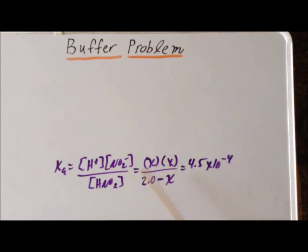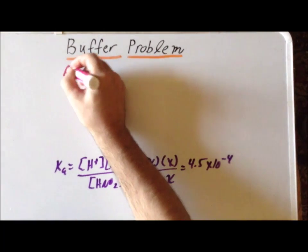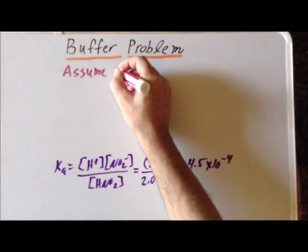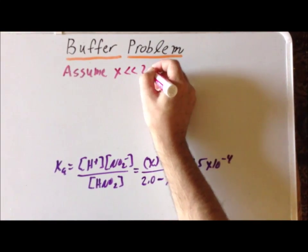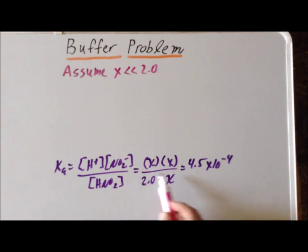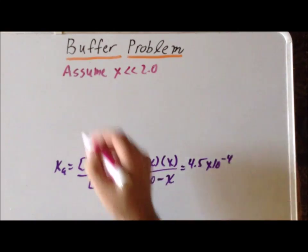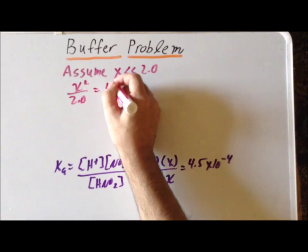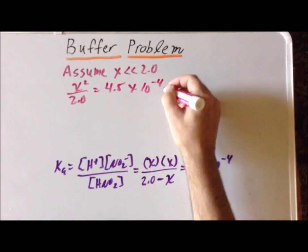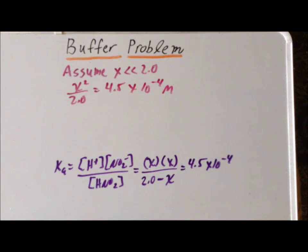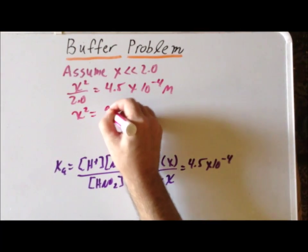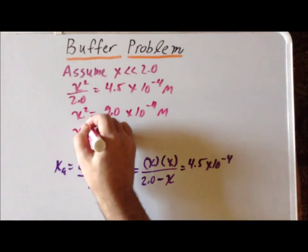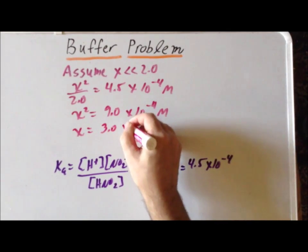To simplify the solution of this equation, let us assume that the amount of nitrous acid that dissociates is very small relative to the initial concentration — in other words, X is much smaller than 2.0. With that assumption, the denominator becomes 2.0 itself. The numerator simplifies since X times X is X², giving us X² / 2.0 = 4.5 × 10⁻⁴. Multiplying each side by 2, X² = 9.0 × 10⁻⁴. Taking the square root of each side, X = 3.0 × 10⁻² molar.